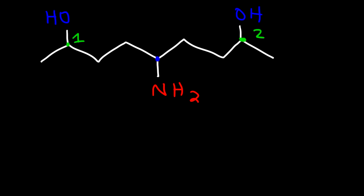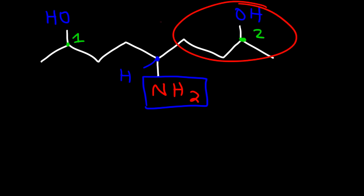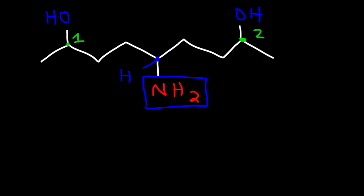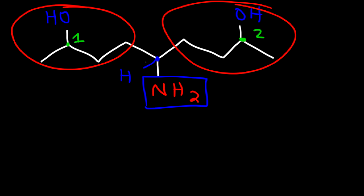Now what about this carbon — is that a chiral center? We have a hydrogen attached to it and an NH2 group. But notice that the right side is the same as the left side. Because the right side is the same as the left side, these two groups are equivalent, so it doesn't have four different groups. So this is not a chiral center.